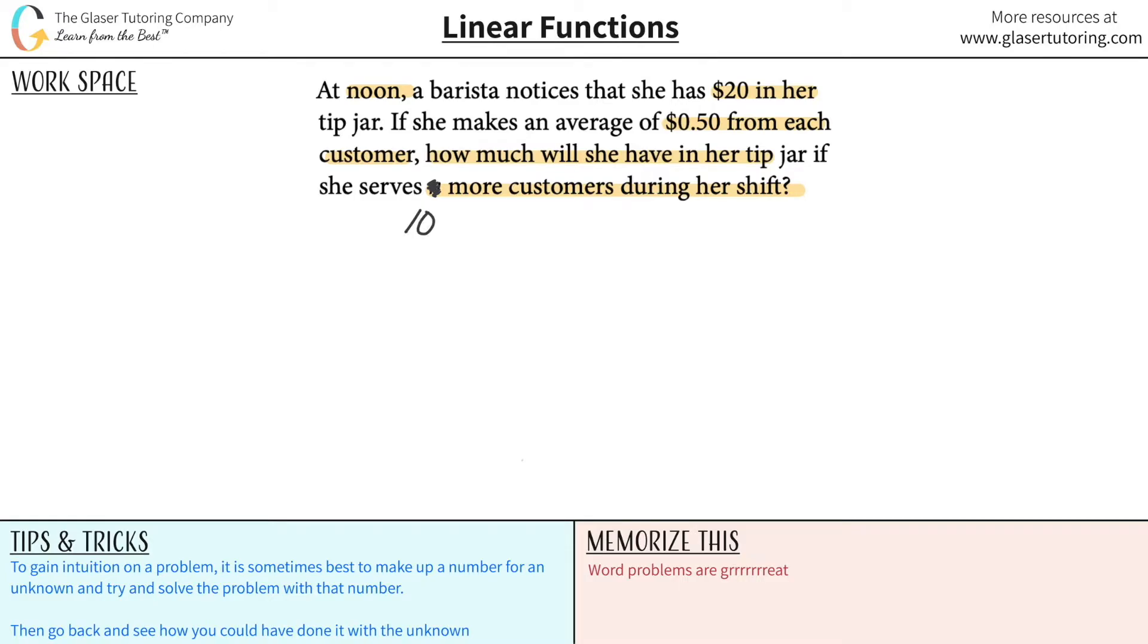Now, let's gain some vivid detail about what's going on here. The more vivid you can become, the more you can create a picture out of this, the more accurate you'll be in getting the right answer. So at noon, 12 o'clock, the barista notices she has $20 in her tip jar. So here's the jar. How much is in it? 20 bucks.